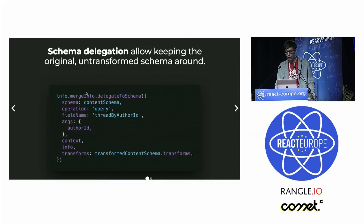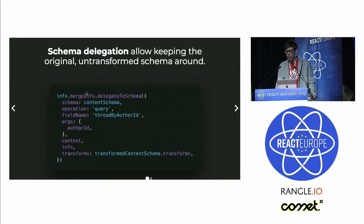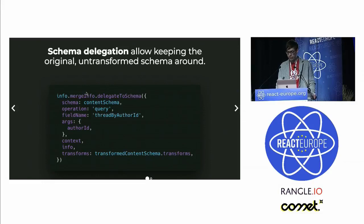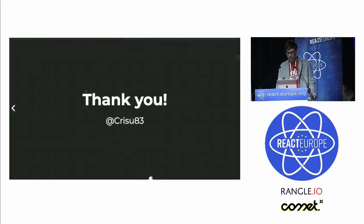The last thing briefly discussed yesterday was schema delegation. In short, it allows you to keep around the original schema from one of your APIs — even though you're not exposing it to the outside world — but when another exposed field needs to query it, schema delegation is the way to achieve this.